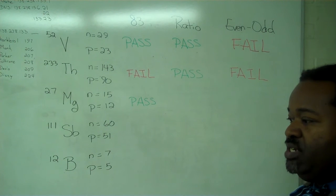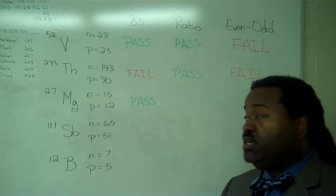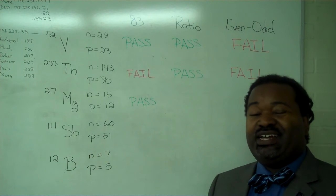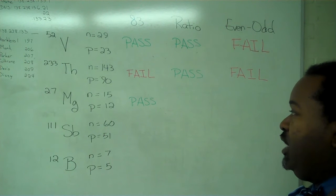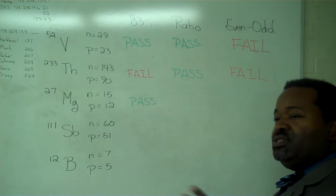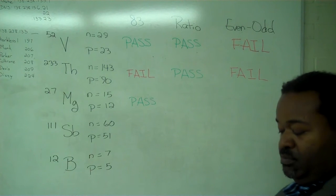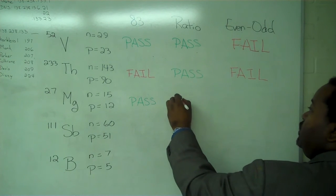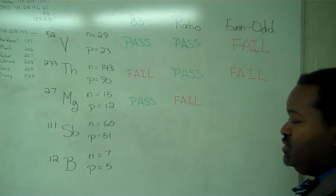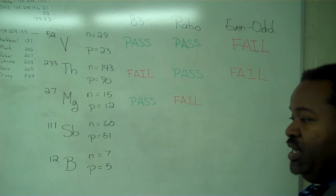For the ratio test, we have 15 divided by 12. That is greater than 1. However, because magnesium is atomic number 20 or less, there is an addendum to the rule that you can only have 0, 1, or 2 more neutrons than protons. Here, number of neutrons minus number of protons is 3. So that's too many neutrons. So this is a fail on the ratio test because of the 20 protons or less addendum.